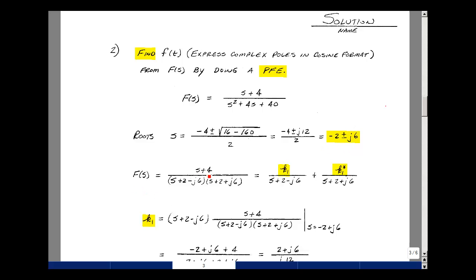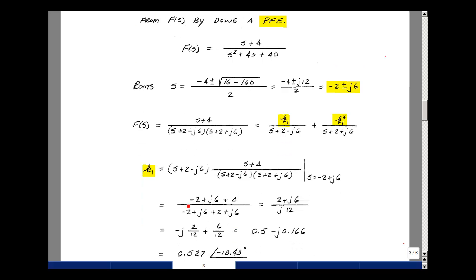Could write F(s) as (S + 4) divided by these two roots, (S + 2 - j6), and then times (S + 2 + j6). I can write a partial fraction expansion as K1 over (S + 2 - j6) plus K1 conjugate divided by (S + 2 + j6). To do the cosine format, all we need to do is find K1. K1 is going to be equal to our transfer function, multiplied by (S + 2 - j6), and evaluated when S is equal to minus 2 plus j6. Plugging that in for S, I have minus 2 plus j6 plus 4. That's going to be equal to 2 plus j6. For the denominator, this term cancels with this, and plugging in for S minus 2 plus j6, and I have a plus 2 plus j6. The plus 2 and the minus 2 cancel, and I get j12.